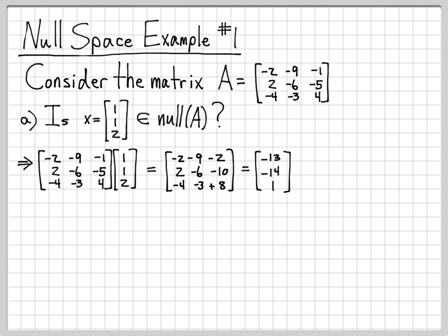So after computing A times x, I end up with the vector, a negative 13, a negative 14, 1, which is obviously not equal to 0, 0, 0. So, this vector that we were given, 1, 1, 2, is not in the null space because I did not end up with the vector 0, 0, 0.